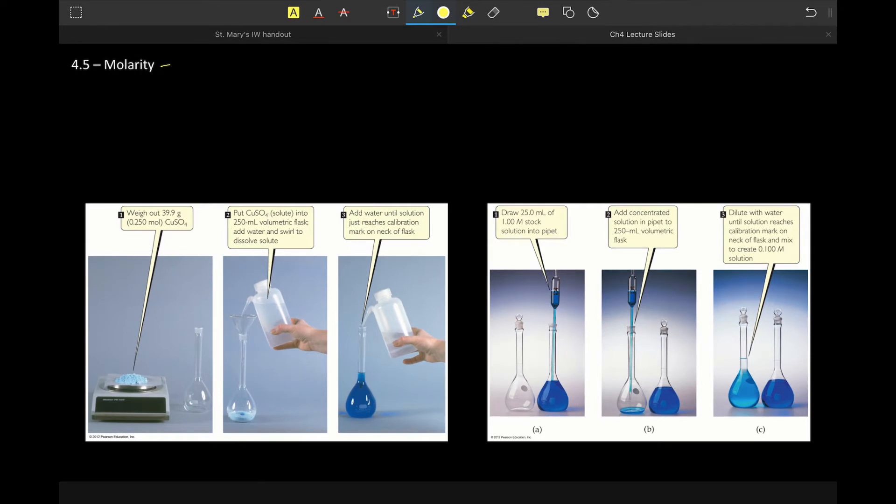So first of all, molarity. Note that anytime we say concentration during the course of the year, we always mean molarity. That's what that's always going to be a stand-in for. There are other ways to measure concentration, like grams per milliliter, or more specifically, grams per 100 mils is one of the ways that we express concentration. There's also molality, which if we have time, we'll talk about a little bit later.